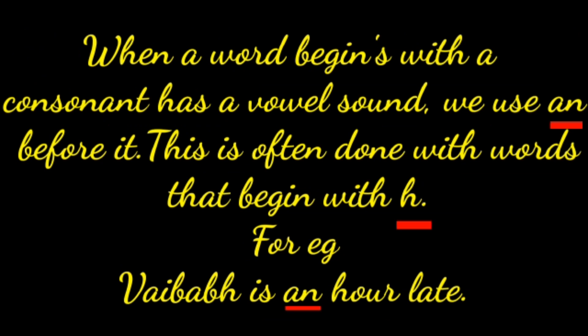When a word begins with a consonant letter but has a vowel sound, we use an before it. This is often done with words that begin with H. For example: Vaibhav is an hour late. Here 'hour' begins with a consonant letter but has a vowel sound, so we use an before it.